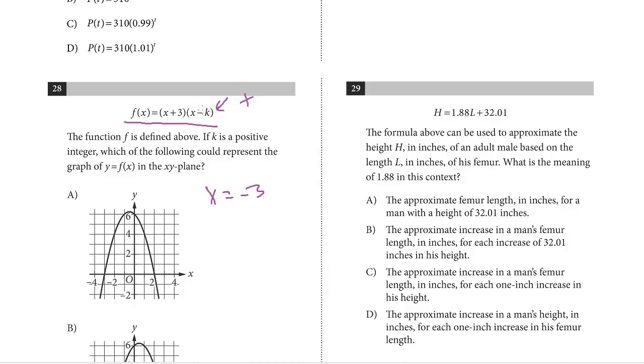Remember, they also told us that k is positive. So if k were 5, it'd be x minus 5. We know that k, which is a positive number, is going to be another solution. So this is a positive number and a negative 3. And how does the parabola open? It opens up. There's no negative sign, it opens up. So we're looking for an upward-opening parabola that has x-intercepts of negative 3 and positive.